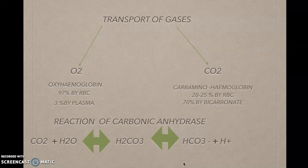There are two gases transported through the blood in our body: oxygen and CO2. The transportation of these gases is carried by the red pigment hemoglobin. When oxygen binds with hemoglobin, it is known as oxyhemoglobin. When carbon dioxide binds with hemoglobin, it is called carbaminohemoglobin. 97% of oxygen is carried by RBCs and 3% is carried by plasma. 20 to 25% of carbon dioxide is carried by RBCs and 70% is transported as bicarbonate through the blood.